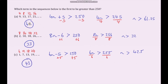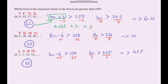We can verify these answers. For the top sequence, we said the 62nd term is the first greater than 250. Replacing n with 62 in our nth term gives 253, which is indeed greater than 250. And since we're going up by 4 each time, the previous term would be 249 — just below 250. So the 62nd term is definitely the first term greater than 250, confirming our answer is correct.